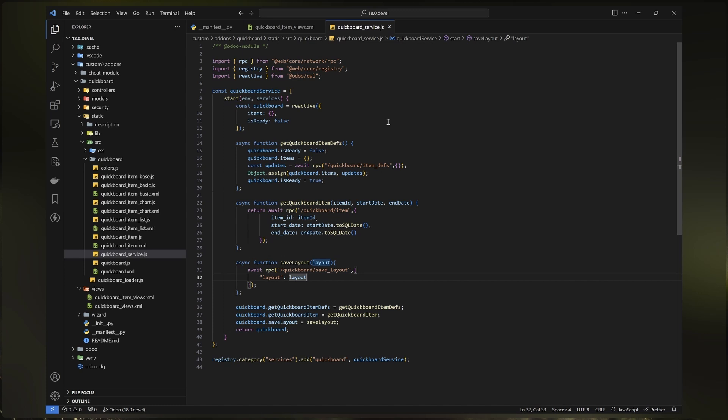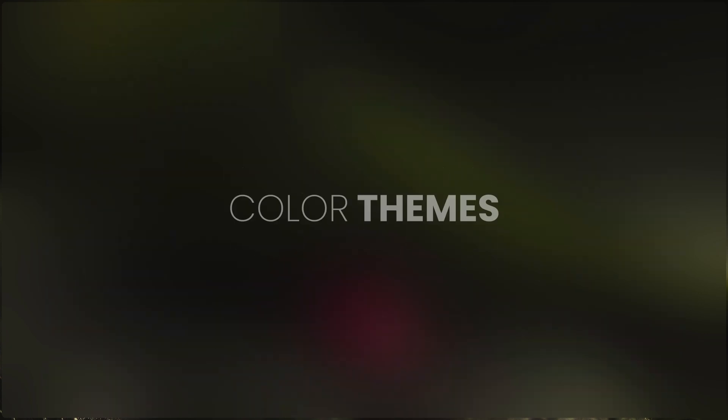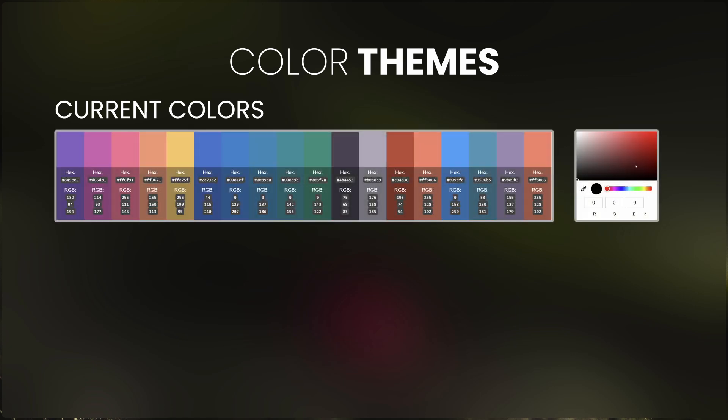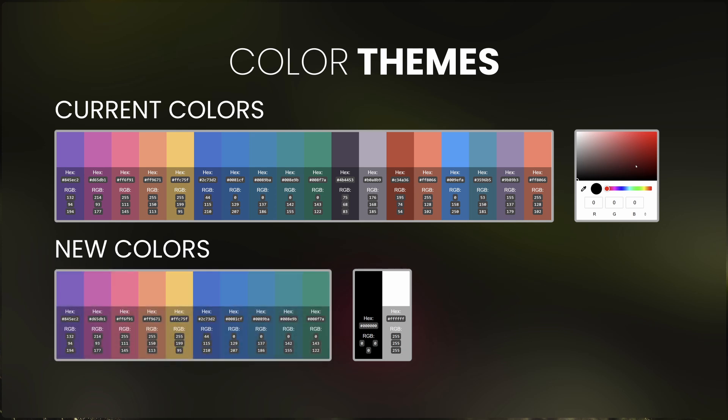We'll leave the AI generation for later since it won't work if there are other errors elsewhere. Now let's see how I implemented the new features. First, the color themes. The current version only has one color palette for chart items and millions of colors for basic items. Applying a color theme to basic items means we can no longer have millions of colors, so I decided to limit the text color for basic items to just black and white.